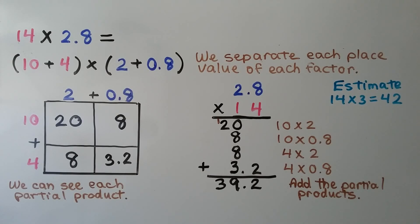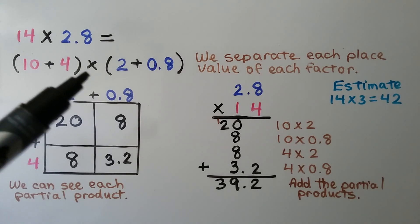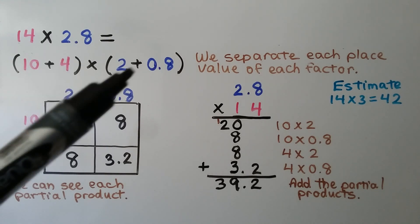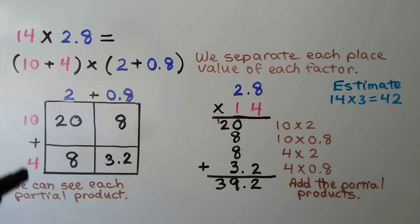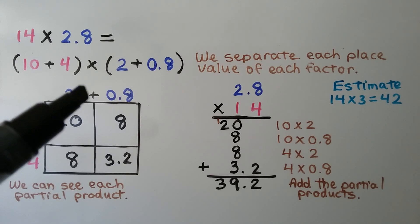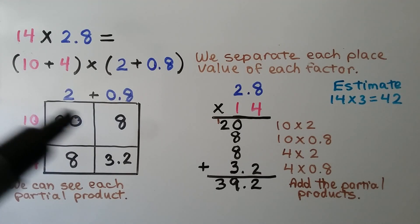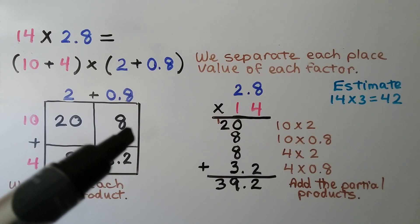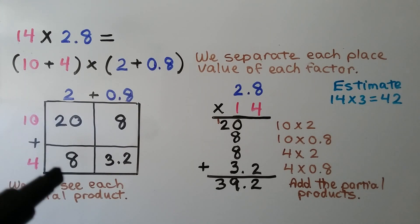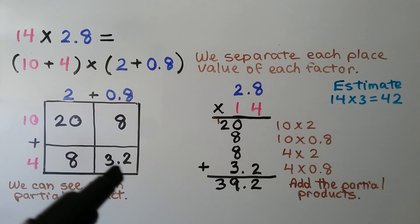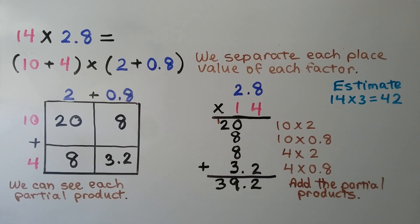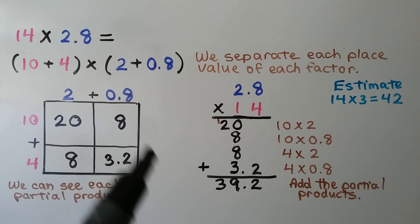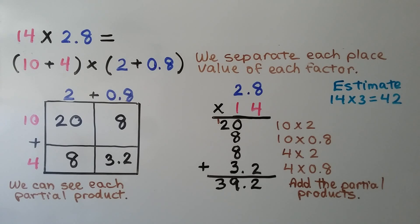Here we have 14 times 2 and 8 tenths. We separate each place value: 10 plus 4, multiplied by 2 plus 8 tenths. We make our area model. 10 times 2 is 20; 10 times 8 tenths is 8 — we move the decimal place one place to the right because we're multiplying by 10, a power of 10. 4 times 2 is 8; and 4 times 8 tenths is 32 tenths, which we regroup as 3 and 2 tenths. We add all the partial products and get 39 and 2 tenths.